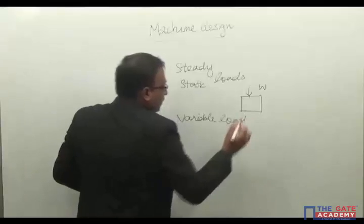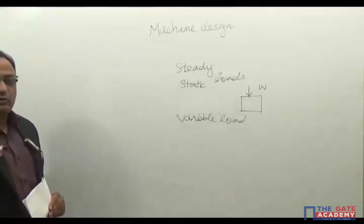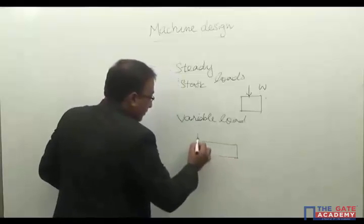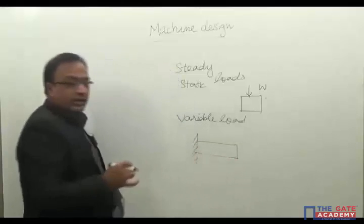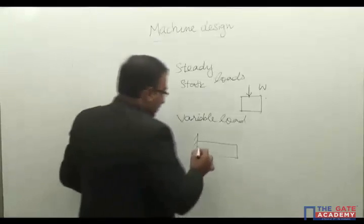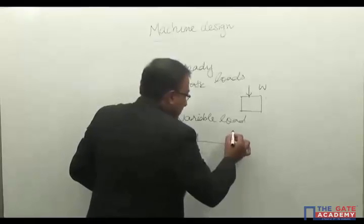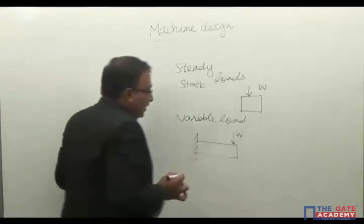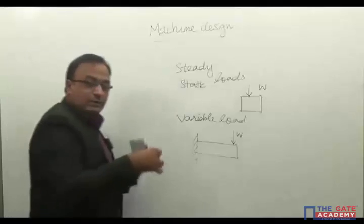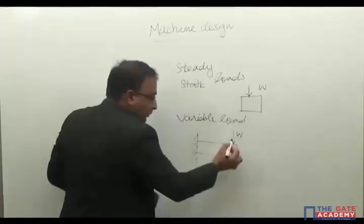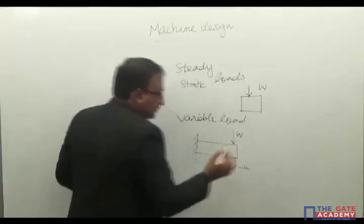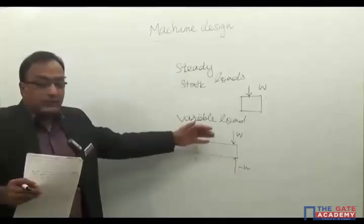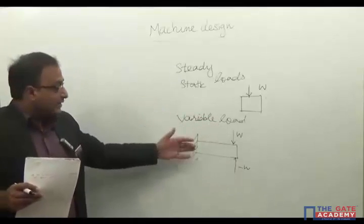The second type is variable load, which means the magnitude of the load varies with time — sometimes it becomes maximum, sometimes minimum, or maximum in the other direction. For example, consider a cantilever fixed at one end with a load W acting downward. The magnitude of this load changes from plus W to minus W, introducing variable stresses in the member.